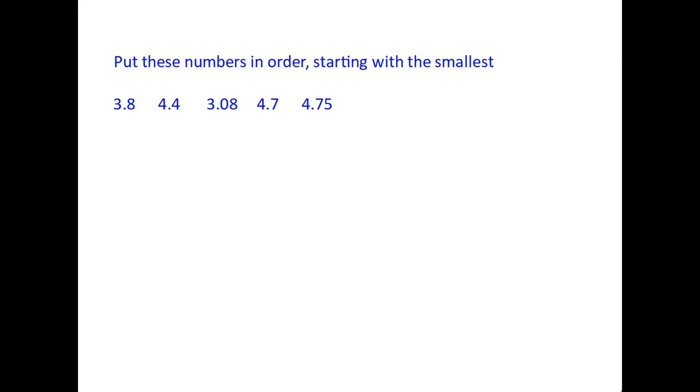Here's another example, and this is where we have to read the question carefully because in this case it's asking us to put these numbers in order again, only we are starting with the smallest. We need to do this in exactly the same way. We have 3.8, 4.4, 3.08, 4.7, and 4.75. Just to make things a little easier, it is worth filling the zeros in once we have them in the column.